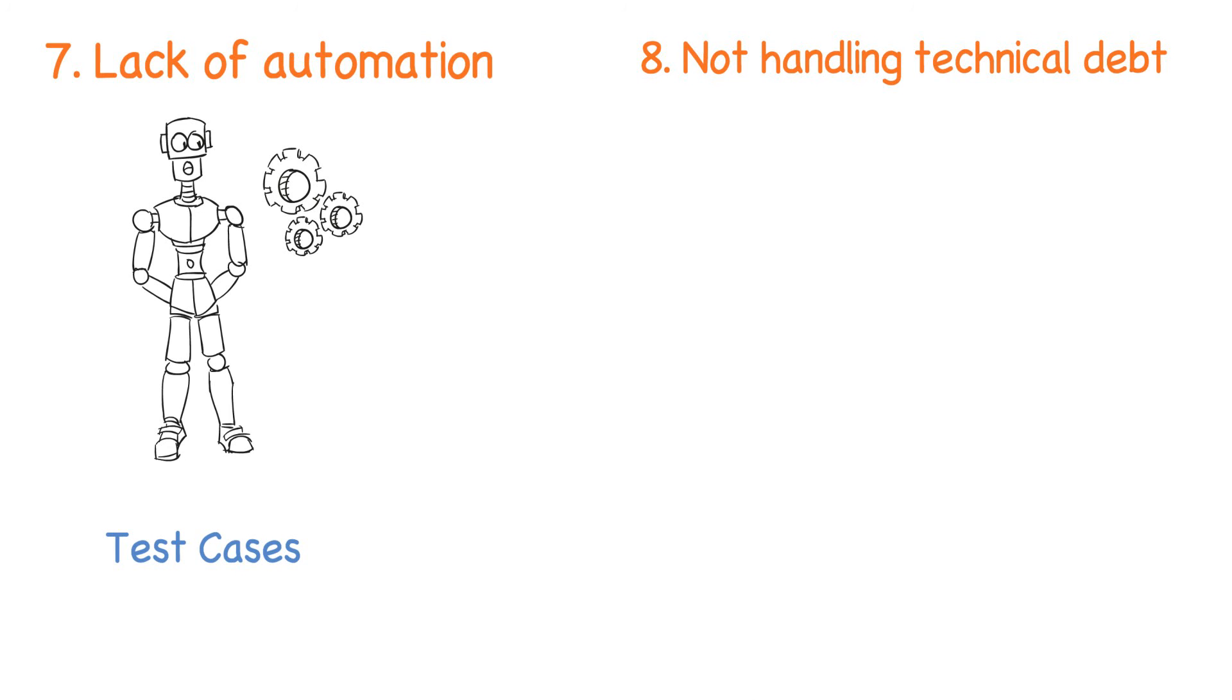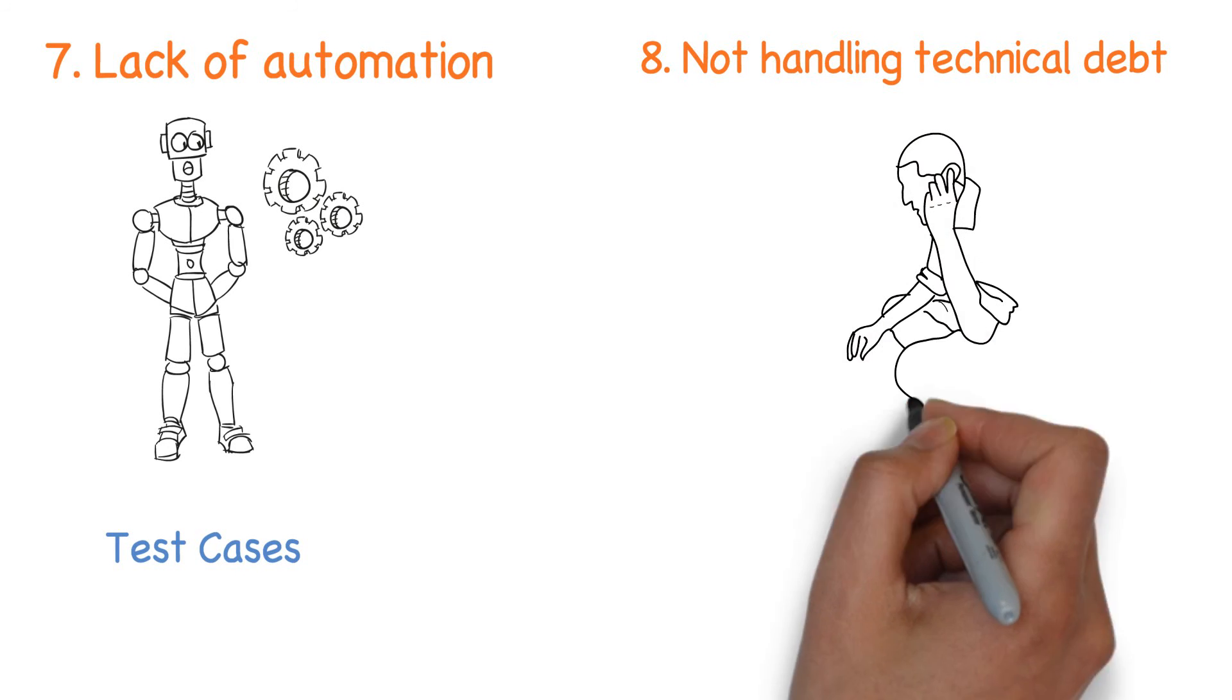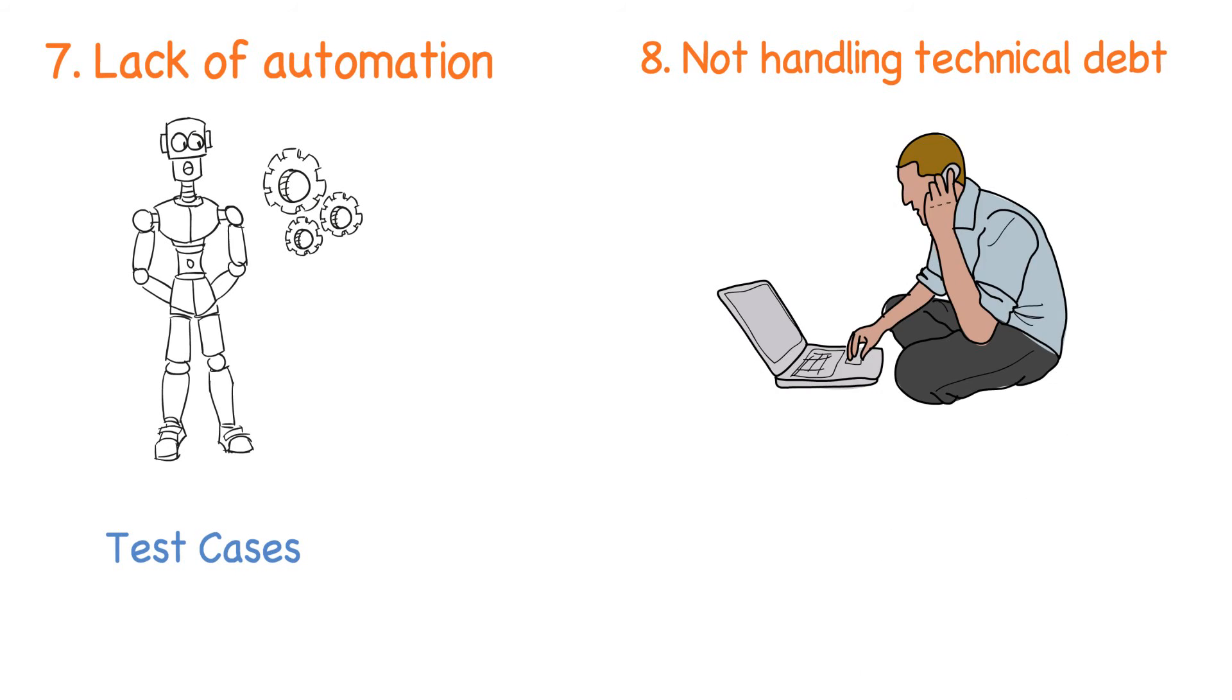Not handling technical debt is another cause for Agile failures. A project with a large base code implementing Agile without a roadmap to improve the code quality would pretty soon end up with a deluge of bugs and blame Agile for exposing them.